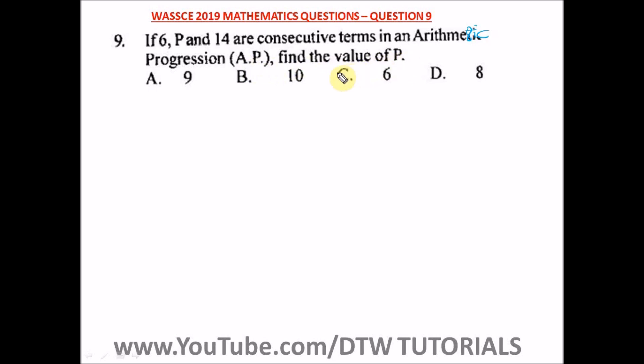Remember arithmetic progression: the first term and d which is the common difference. You get d by subtracting the second term from the first term, then the third term from the second term, and it must give you the same thing. That's the common difference. The difference between this and this will be equal to this and this. So it's easy for us to find P.